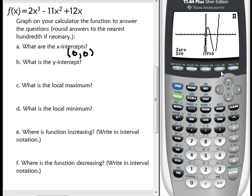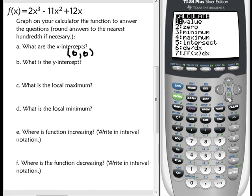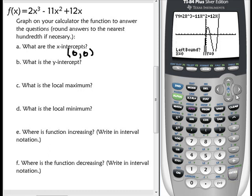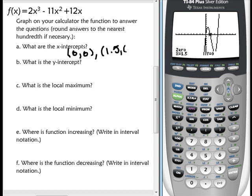So let's find the next one. So once again, I do 2nd, calc, zero. And I'm going to have it to the left of my point, to the right of the point, and hit enter again. And then that's my next one. So I'm going to put a comma here, 1.5 comma 0.